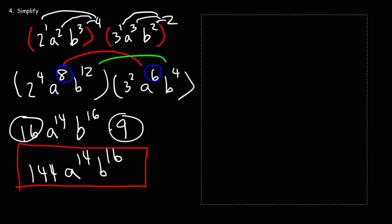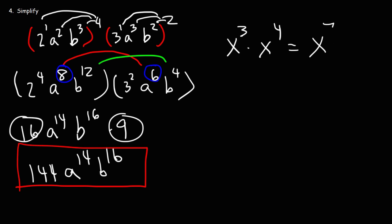Now there's something else I do want to mention. So when you multiply variables with different exponents, you need to add the exponents. 3 plus 4 is 7. When you raise one exponent to another exponent, you need to multiply. 3 times 4 is 12. And when you're dividing, you need to subtract the exponents. 9 minus 3 is 6. So those are some basic rules of exponents that you want to be familiar with.